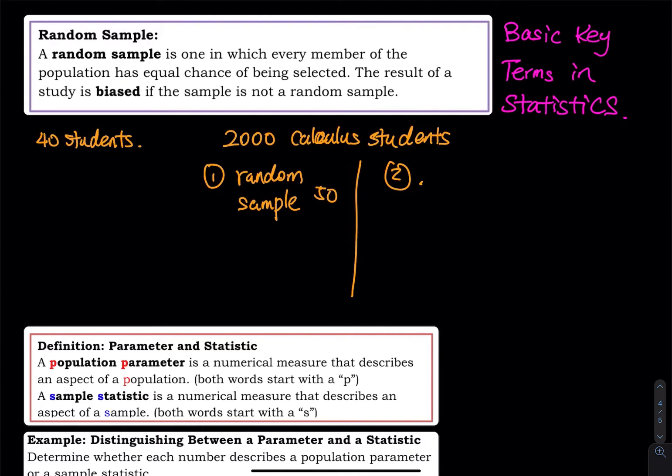Number two is I select the highest scores, meaning that the A students. I select 50 A students and then ask them, do you like my class? Would you like to take my class again? Which one is biased? Which one is not? The answer is, this one is biased.